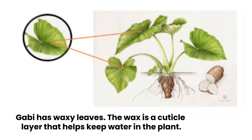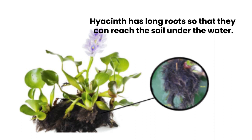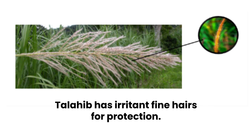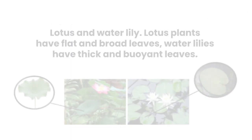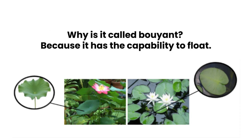Gabi has waxy leaves. The wax is a cuticle layer that helps keep water in the plant. Hyacinth has long roots so that they can reach the soil under the water. The vine has irritant fine hairs for protection. Lastly, lotus and water lily — lotus plants have flat and broad leaves, while water lilies have thick and buoyant leaves. It is called buoyant because it has the capability to float.